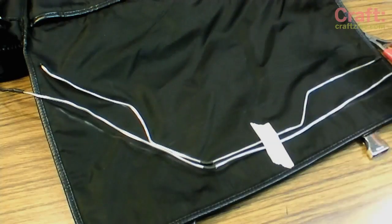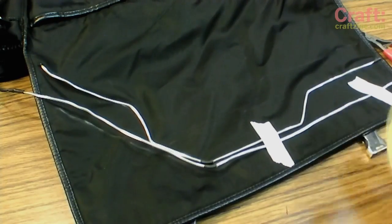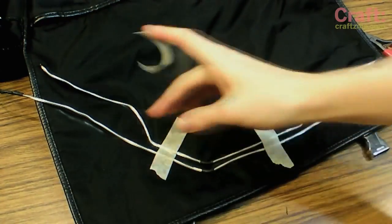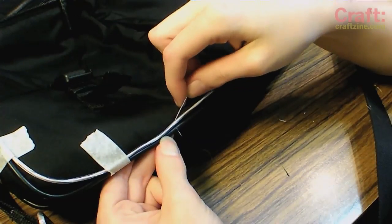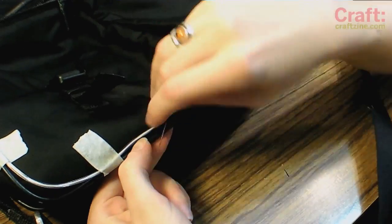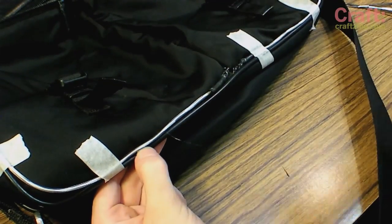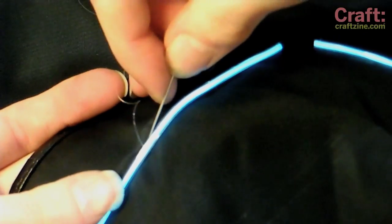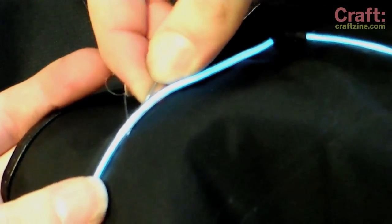Lay out your strands of EL wire along the chalk lines of your design. We find that masking tape works well to anchor the strands while you stitch them in place. Use a whip stitch and your invisible thread to affix the EL wire strands to the bag. This stitch catches the fabric, then wraps around the EL wire and catches the fabric once more.